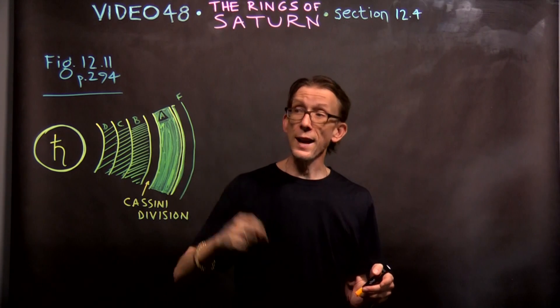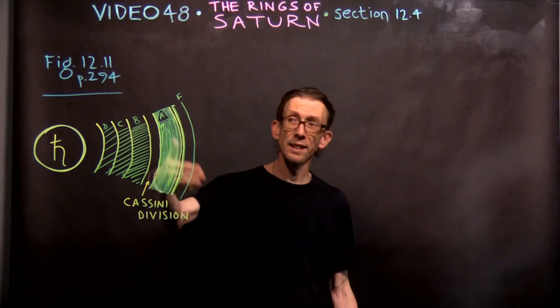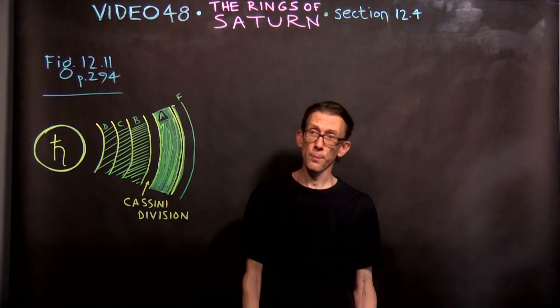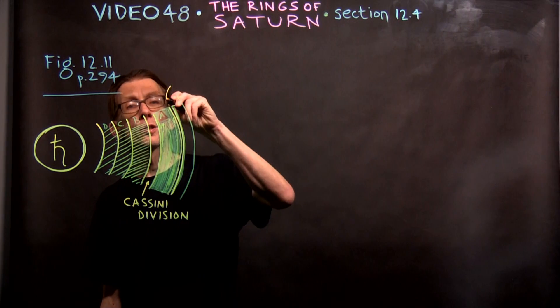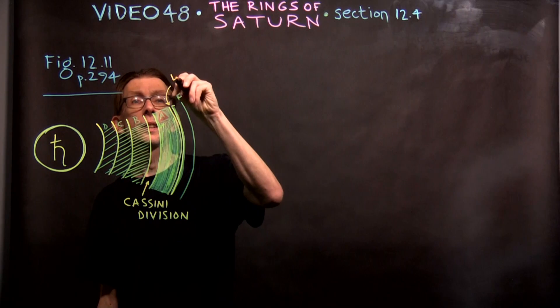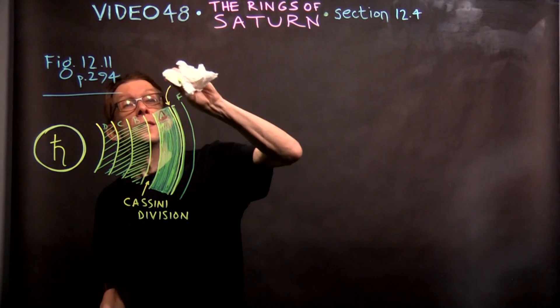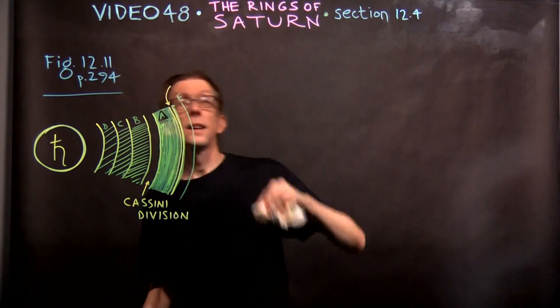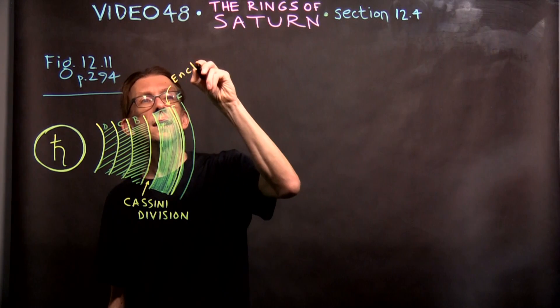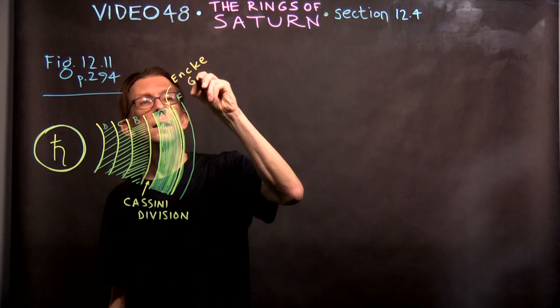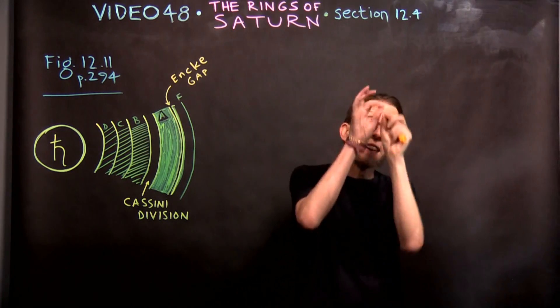But on the other side of that, you get the A ring, which is the brightest of all of them. On the outer edge of the A ring is a little bitty gap, and it's been sort of hard to draw in the picture here. It's known as the Encke gap. Not I-N-K-Y, but E-N-C-K-E gap.